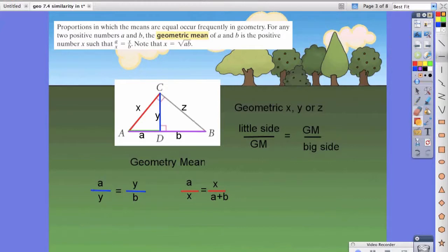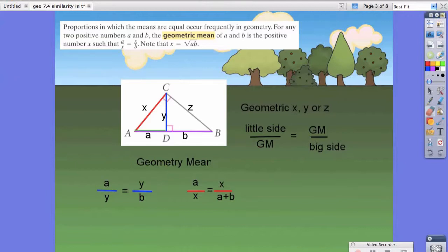Notice that y and z cannot count as a big side or a little side, because it is considered a geometric mean. Let's try the one in blue. For the blue, we have our geometric mean is y. The little side that's touching our blue line is A. And our big side that's touching the blue line is B. That's why we have the following geometric means below.